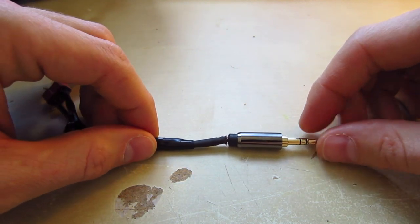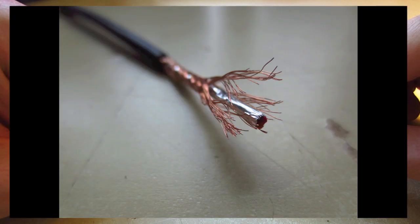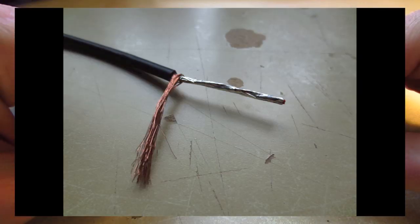You will have an outer wrapping which is carrying your negative or your ground. And then you open that up, then there's two wires in the middle.